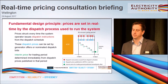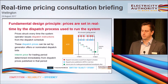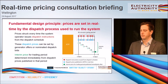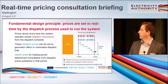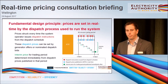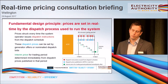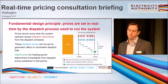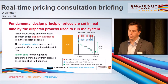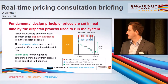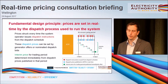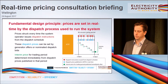Prices will be struck every time the system operator issues new dispatch instructions from the dispatch schedule, and that will occur at least once every trading period. These red dots indicate the issuing of dispatch instructions. From that dispatch schedule we will produce dispatch prices, set by the interaction of generator offers and nominated dispatch or essentially dispatchable bids. The interim price for the trading period will be determined immediately after the end of that trading period through some averaging process.